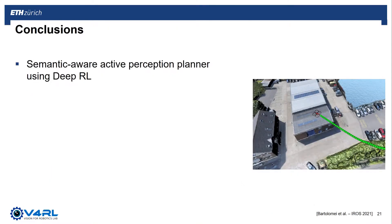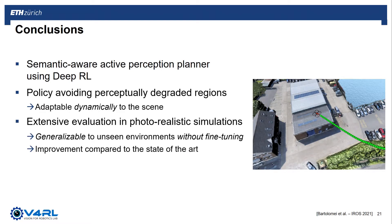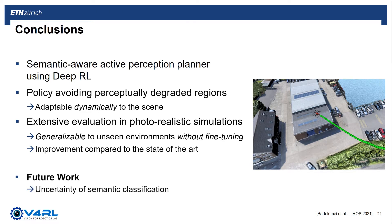To conclude, in this work we present a semantic-aware active perception planner for UAVs that uses deep reinforcement learning. We demonstrate that the proposed policy architecture can avoid perceptually degraded regions, thanks to the capacity of the planner to adapt dynamically to the scene in view. In the extensive evaluation carried out in a set of photorealistic models and reconstructions of real-life places, we demonstrate that our approach is generalizable to unseen environments at training time without the need of additional fine-tuning. It also beats the current state-of-the-art in active perception, both in success rate and pose estimation error. As future work, our goal is to replace the high-quality segmentation masks with the output of actual semantic segmentation neural networks, and to adapt the policy architecture to deal with uncertainty in the semantic labels.